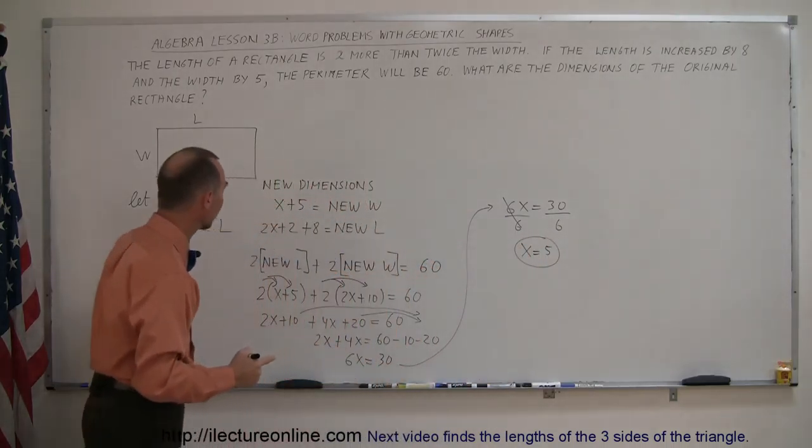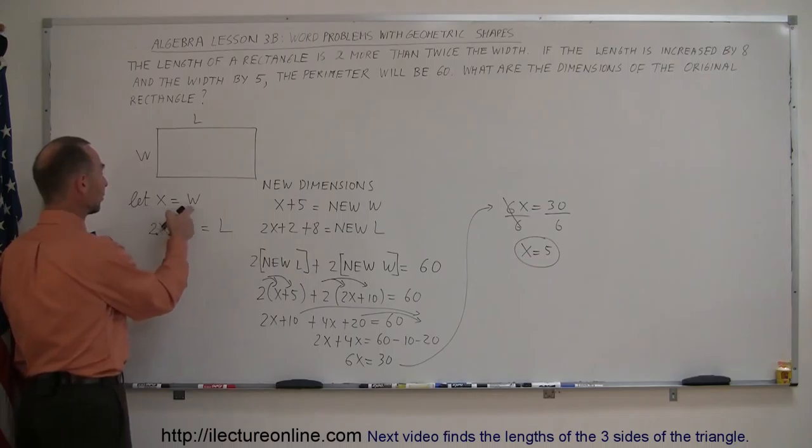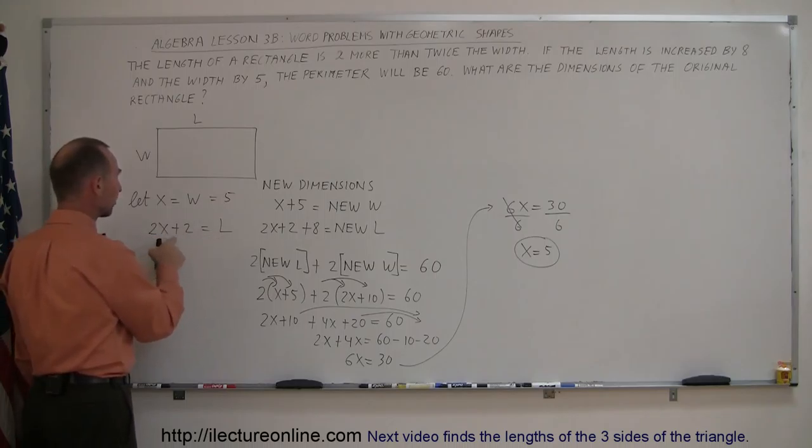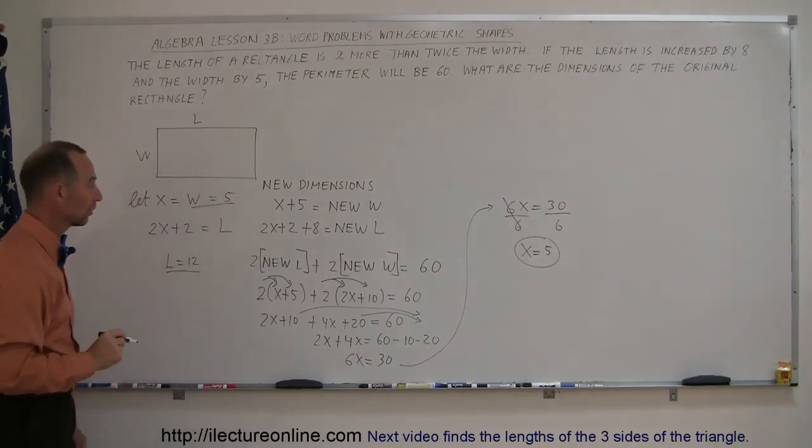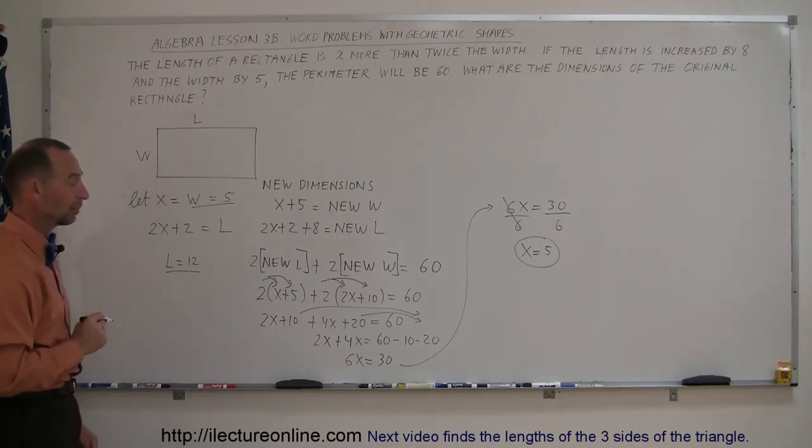Then coming back over here, the original dimensions were let x equals the width. If x equals 5, that means the width is equal to 5. And if the length is 2 times that plus 2, 2 times 5 is 10 plus 2 is 12. So l equals 12. And there are the answers for the original dimensions. And that's how you do that problem.